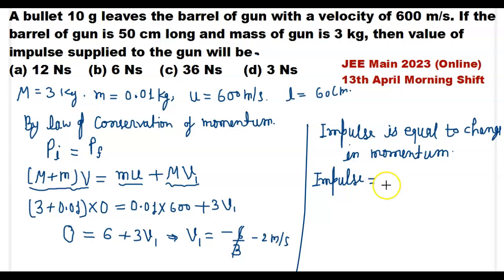Impulse is equal to mass of gun times final velocity of gun minus initial velocity of gun.